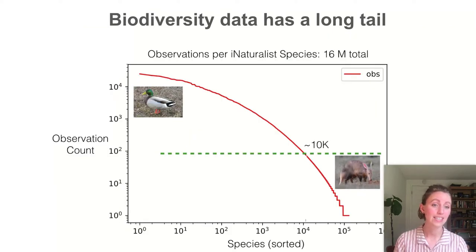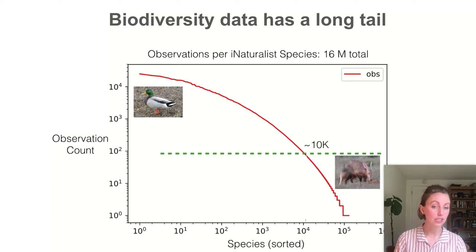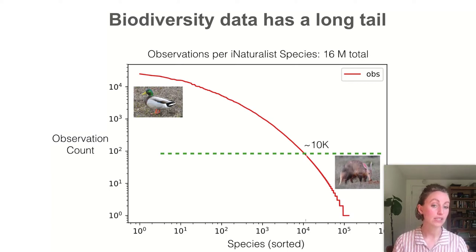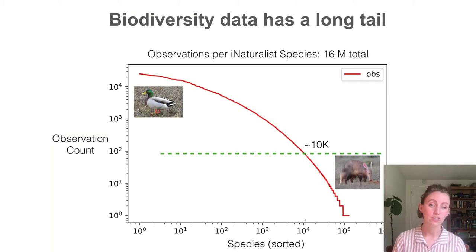Additionally, biodiversity data has a long tail. If you look at 16 million species observations from the community science platform iNaturalist and use the rule of thumb that 100 examples of a species is sufficient to train a computer vision model to recognize it well, then we can see that only 10,000 species out of more than 100,000 total have sufficient data representation to be easily learned.